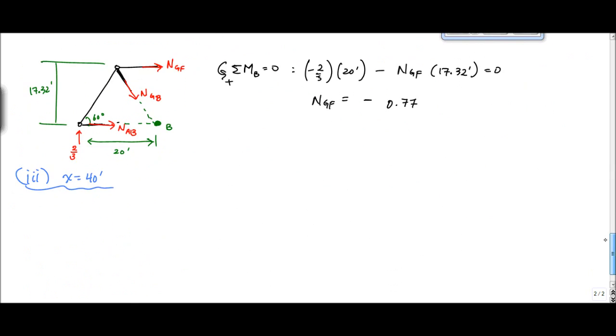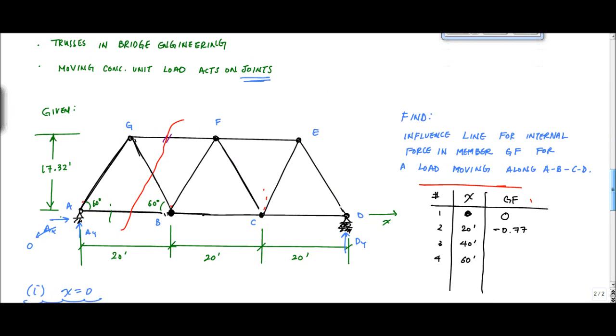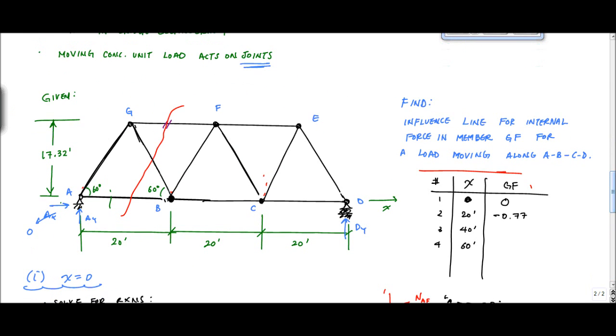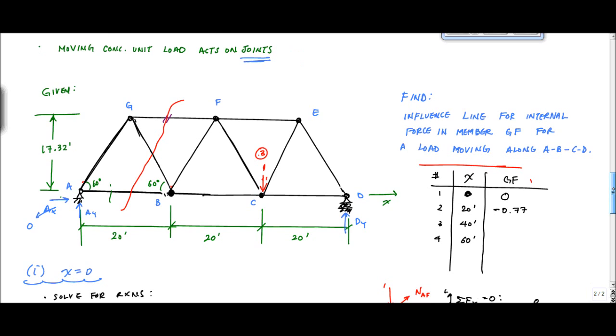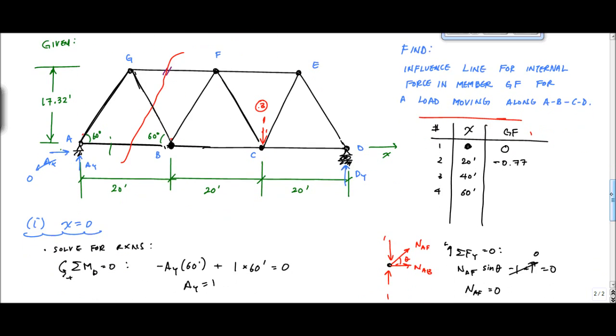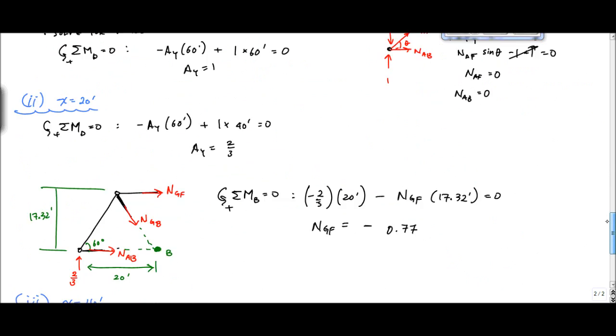Now we're here, we've got to calculate x equals 40 feet. So that means in that case, we have the unit force being applied here at 40 feet. This will be the unit force for case 3 right here. And then, we've got to do the same process. Calculate reactions using equilibrium equations and then use method of sections to find that force at GF.